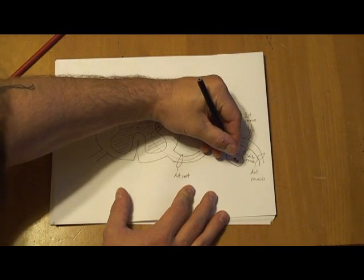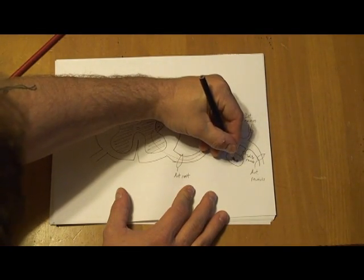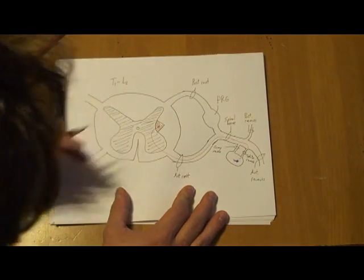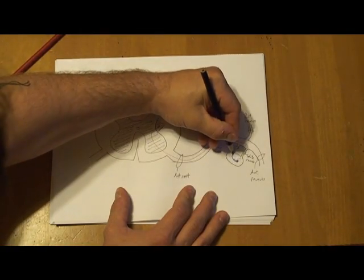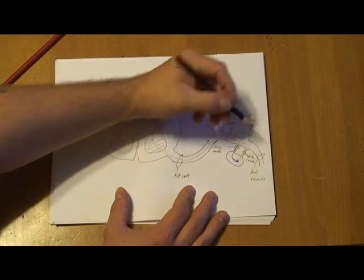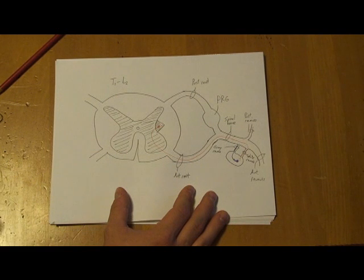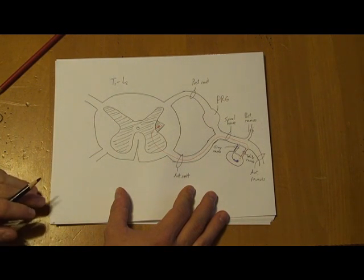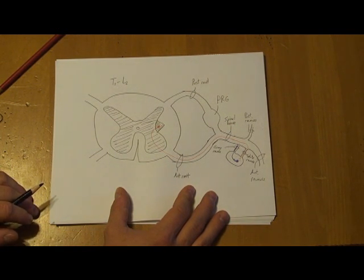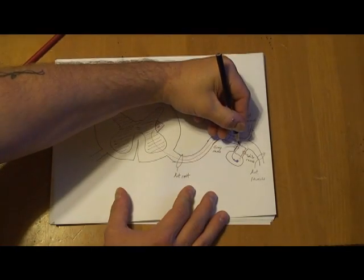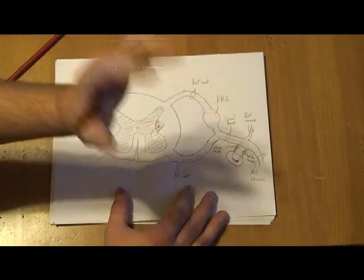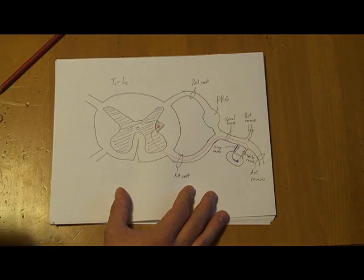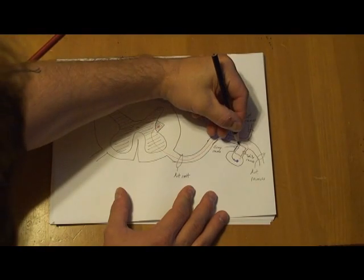But if it synapses here, the postsynaptic cell body sends its axon out, the gray ramus. Gray because all postsynaptic axons in the autonomic nervous system are unmyelinated. Gray ramus is because those unmyelinated axons don't have the whitish fatty myelin coating that the myelinated ones do.